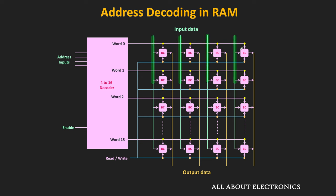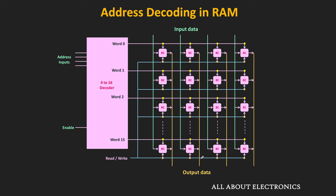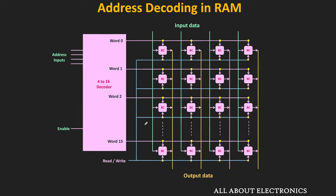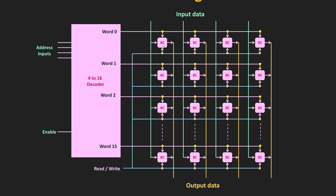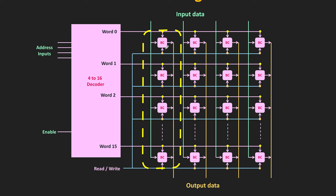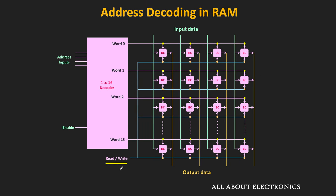The select inputs of all binary cells in the same word are connected together. There are 4 input lines and 4 output lines, and using bidirectional buffers these 4 lines are shared with the data lines. Binary cells in the same column share the same input and output lines, and the read-write signal is applied to all binary cells.